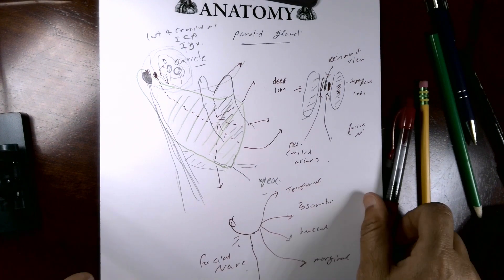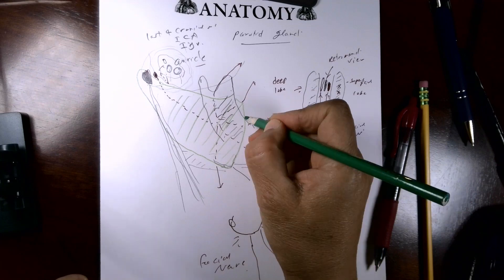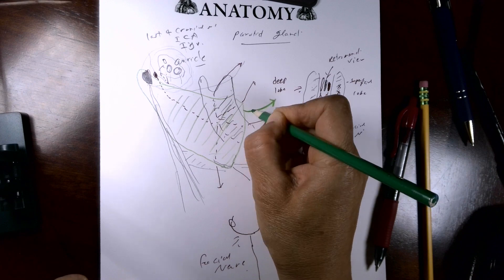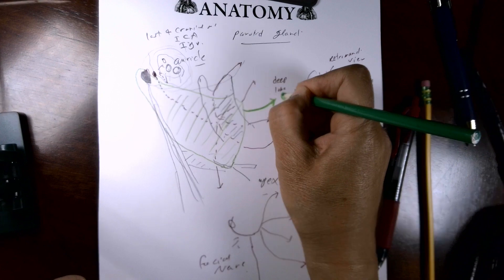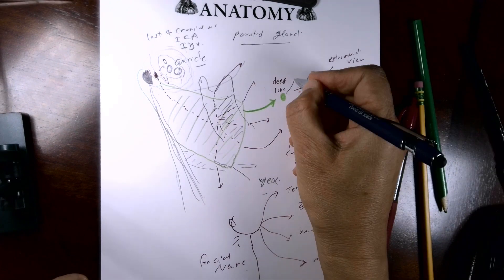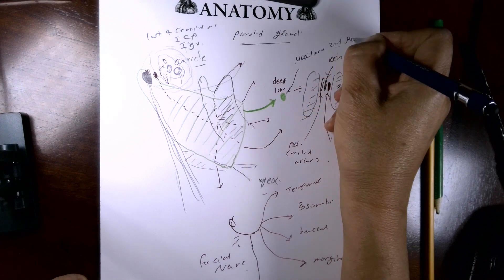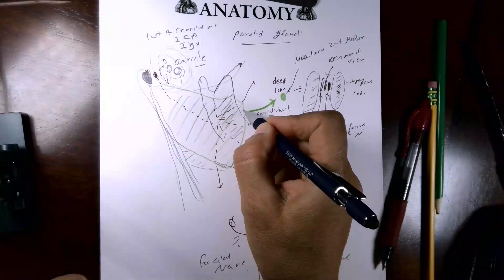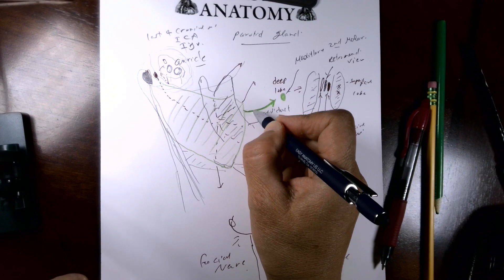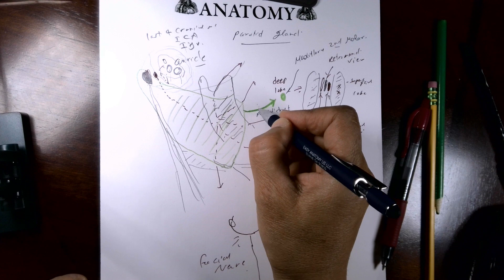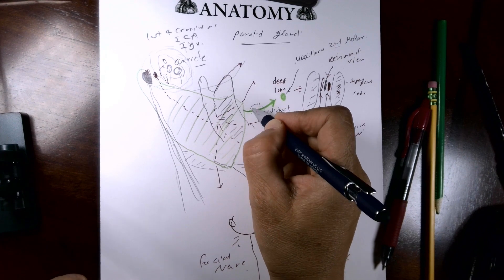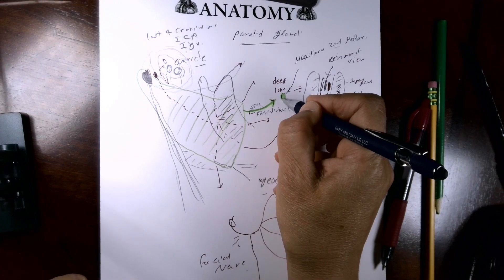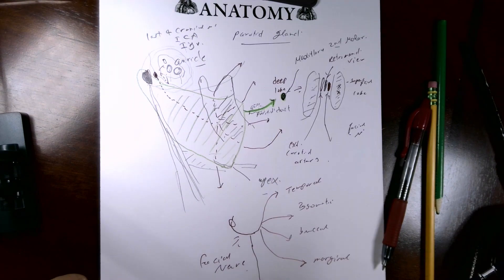The parotid duct extends from the anterior border of the gland, crosses over the buccinator muscle, is surrounded by an accessory gland and lymph nodes, then penetrates the buccinator and opens into the vestibule of the mouth opposite the upper second molar — the maxillary second molar.